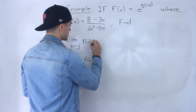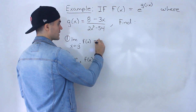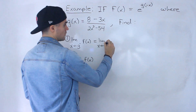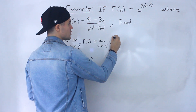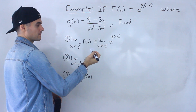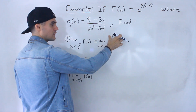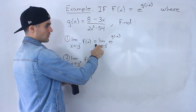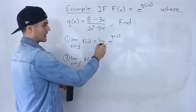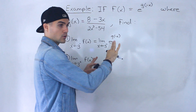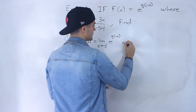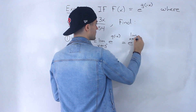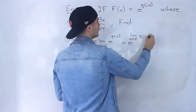Let's work with the first limit. We can rewrite it as the limit as x approaches negative 3 from the negative side of e to the power of g of negative x. Notice that we have g of negative x within another function — it's a composite function. So using properties of limits, we can distribute the limit to the inner function, rewriting this as e to the power of the limit as x approaches negative 3 from the negative side of g of negative x.